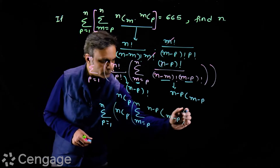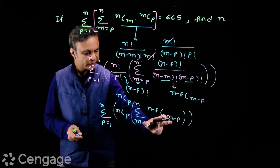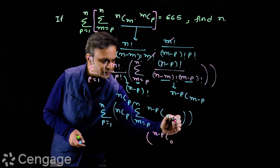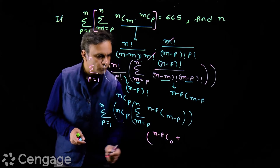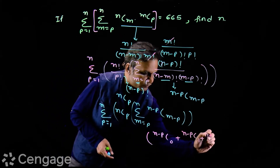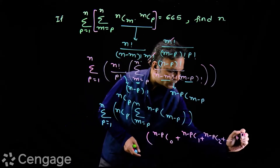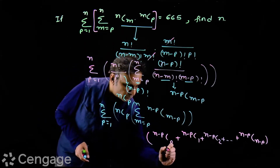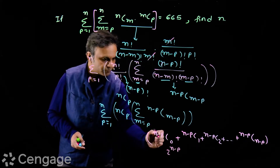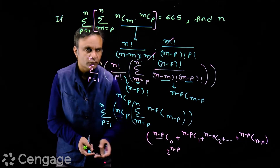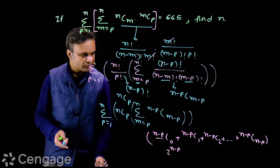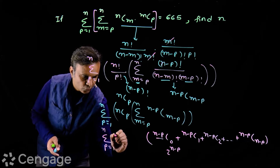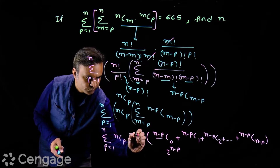Now we first evaluate the inner sigma. Expanding it: when m equals p we get (n minus p)C0; when m equals p plus 1 we get (n minus p)C1; then (n minus p)C2, and so on. The last term is (n minus p)C(n minus p) when m equals n. This is the complete binomial series, so the sum equals 2 to the power (n minus p). Now we have sigma for p equal to 1 to n of nCp multiplied by 2 power (n minus p).